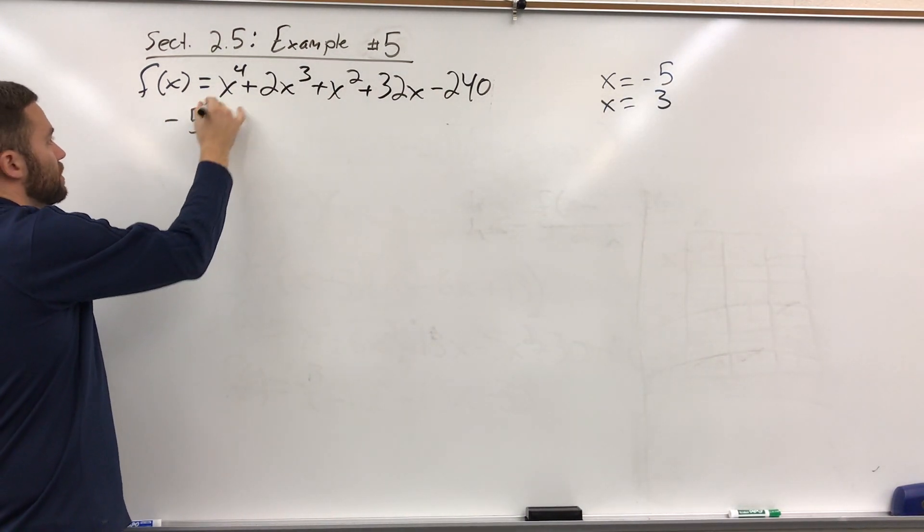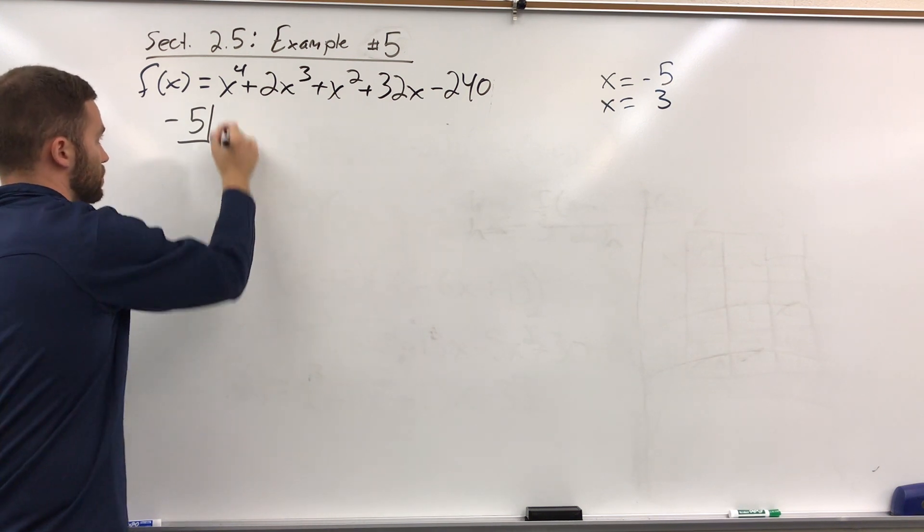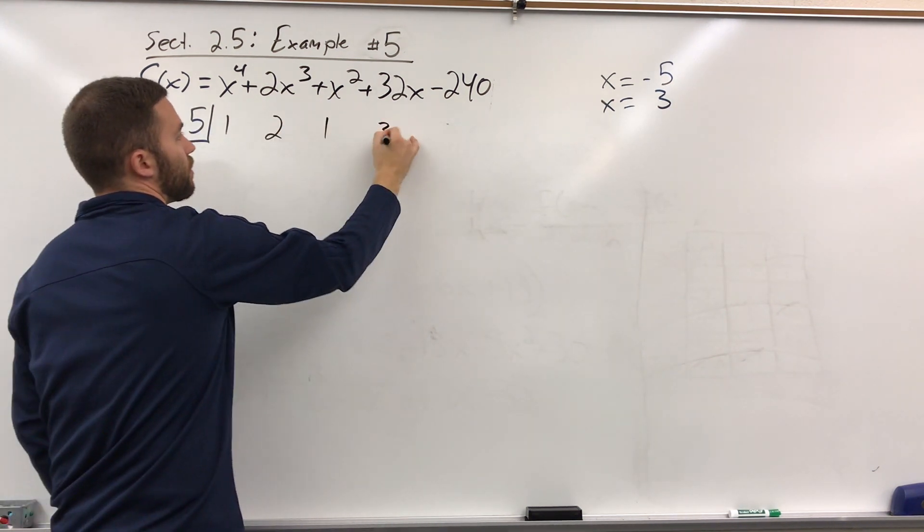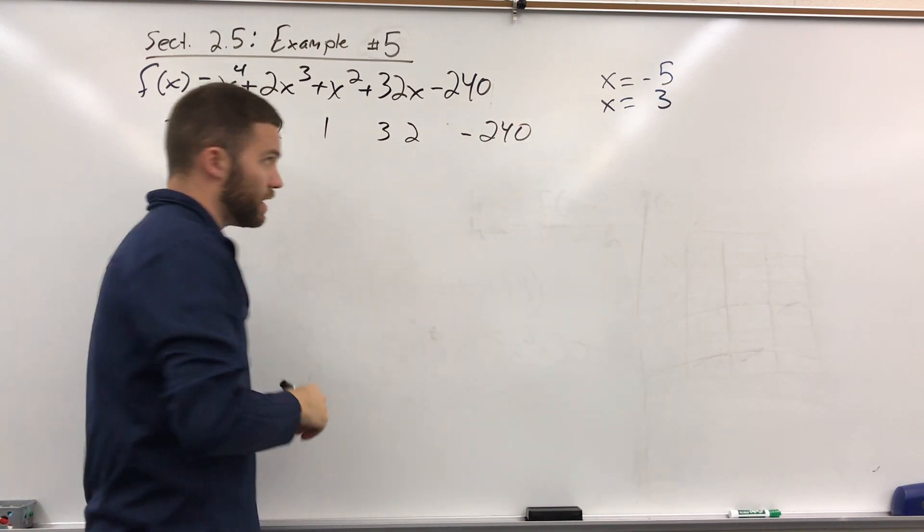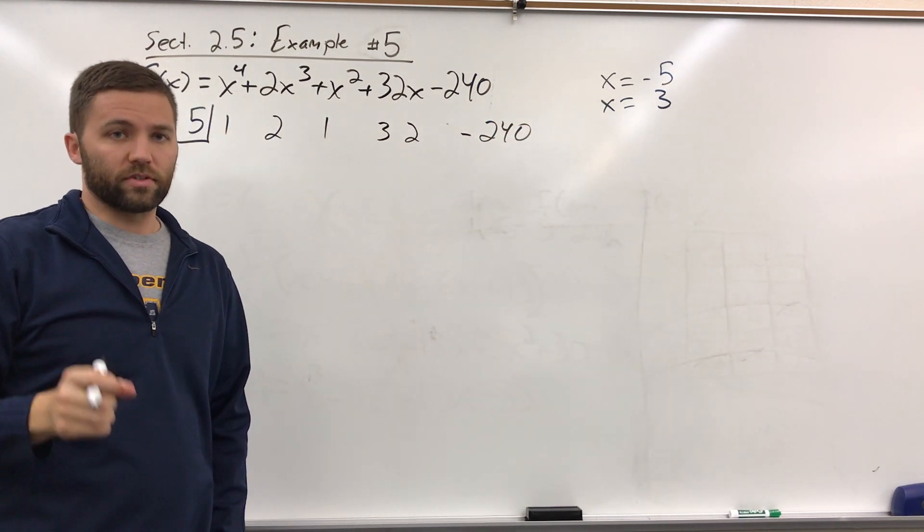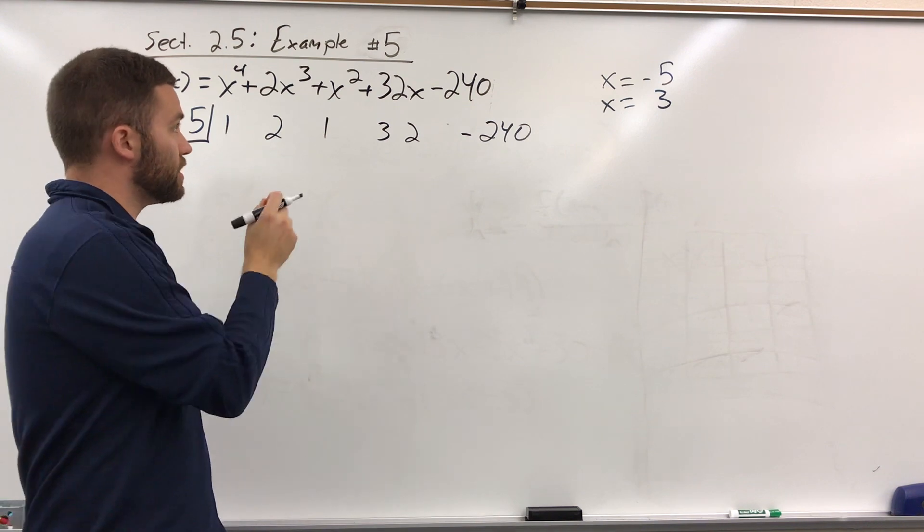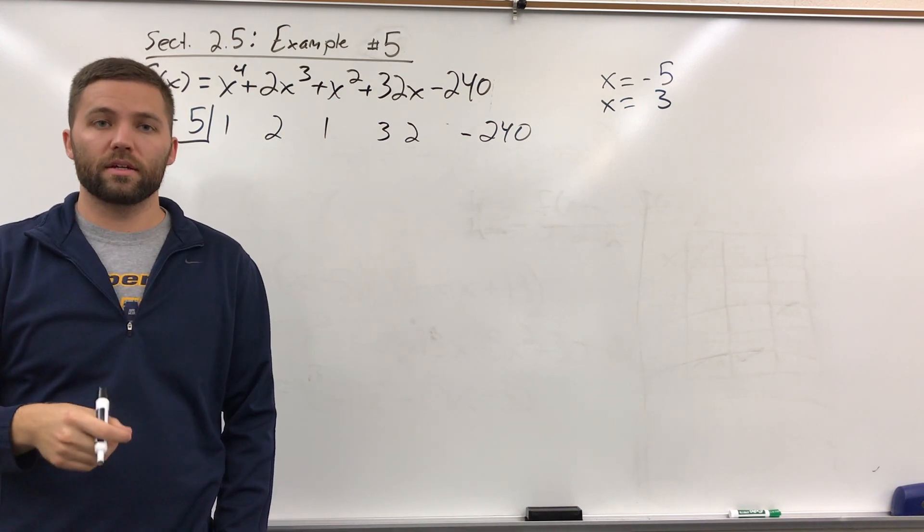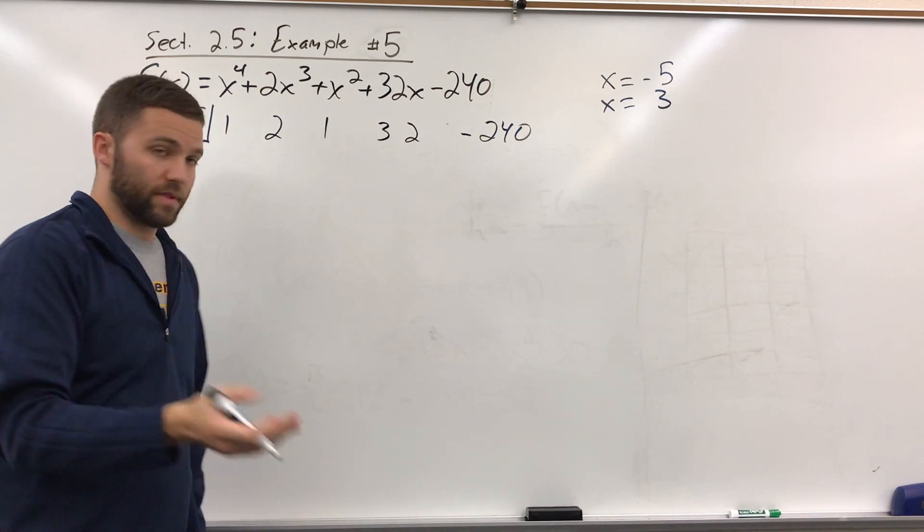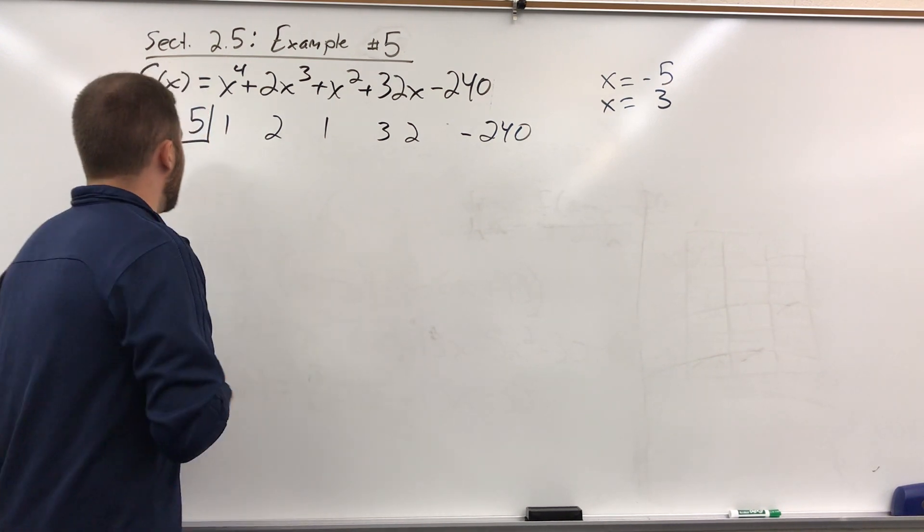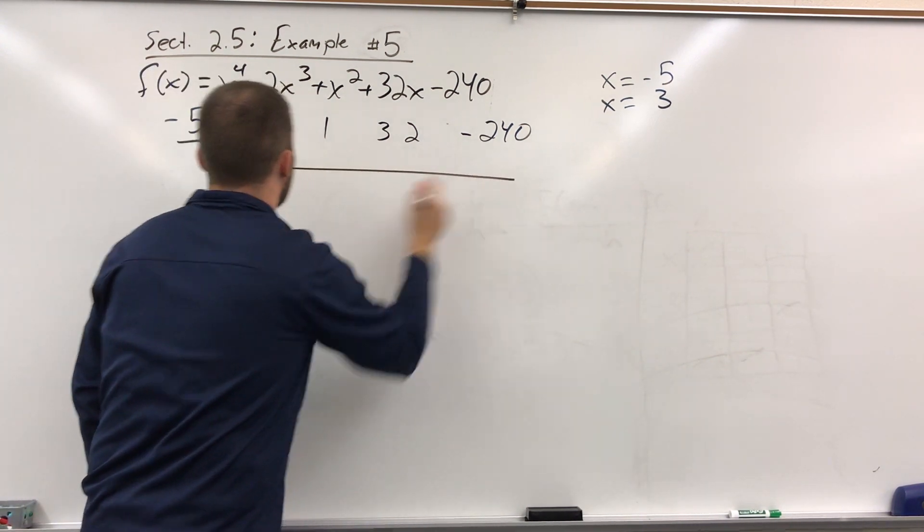We'll put negative 5 in the little box and do some synthetic division here. So 1, 2, 1, 32, negative 240. So what you should do first at this point, actually, is pause the video, go try and do this, and see if you can get down to the answer. Then play the video and see if my answer matches with yours. So let's do the synthetic division here.